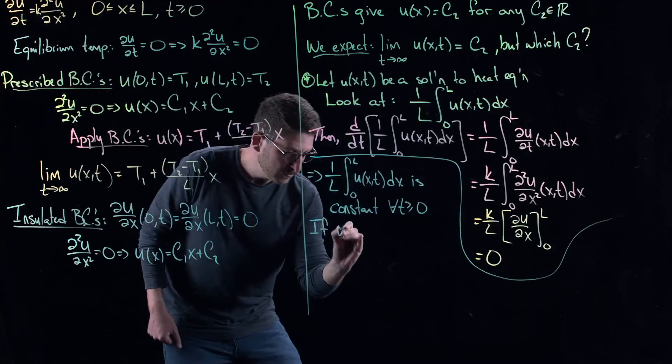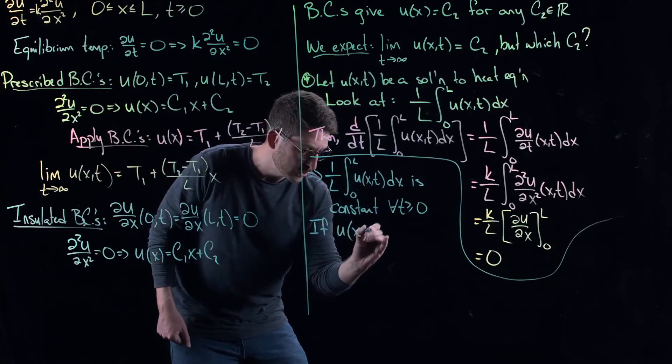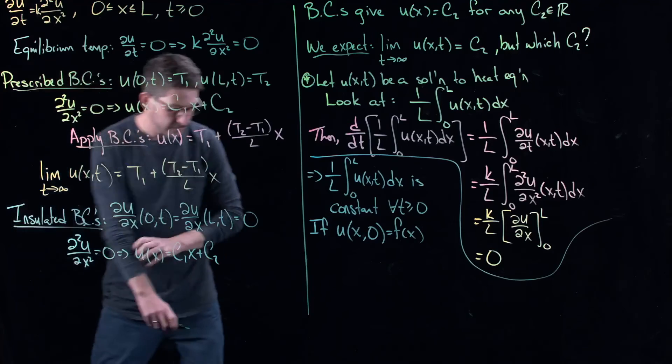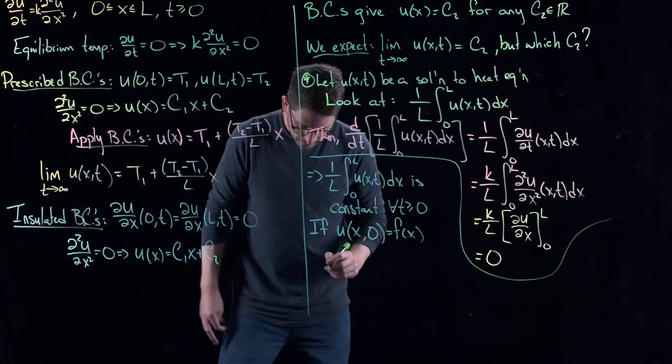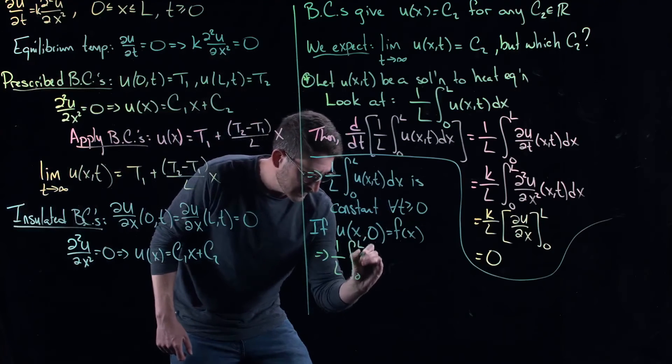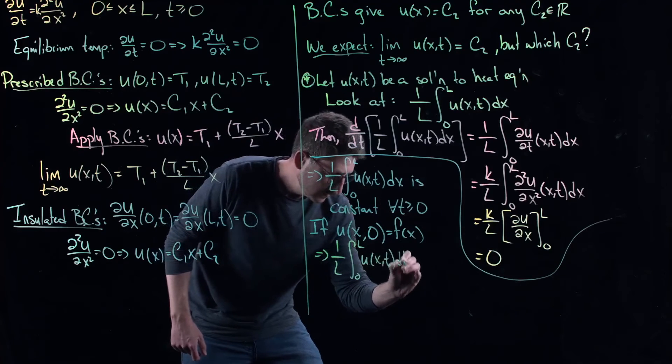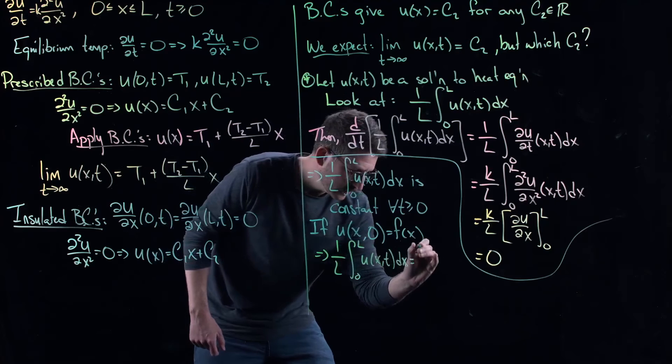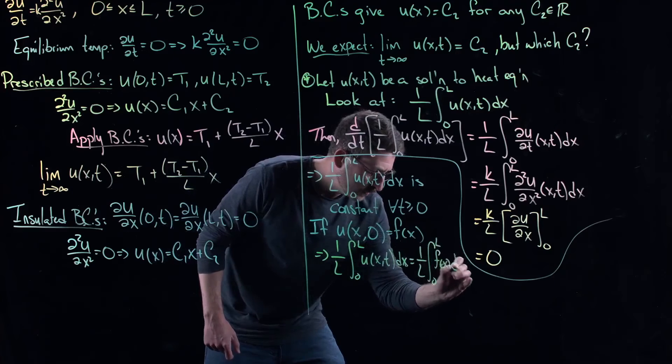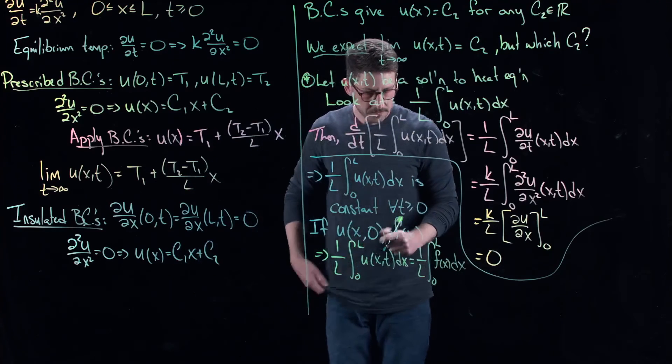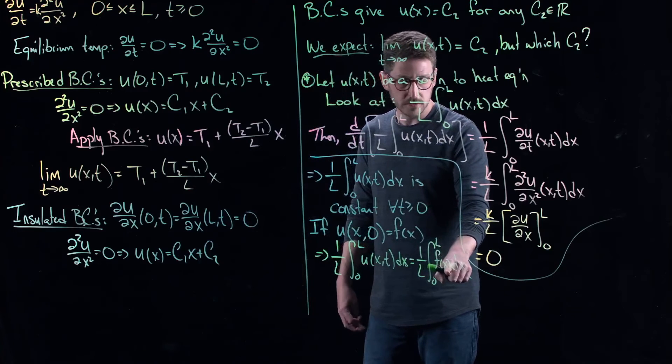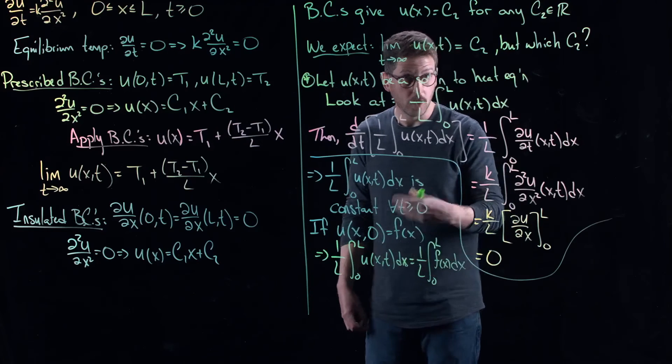And so in particular, if you started with some distribution of heat energy, which again, that's my initial condition, F of X, this tells me that the average of my temperature is just equal to the average of the initial distribution.